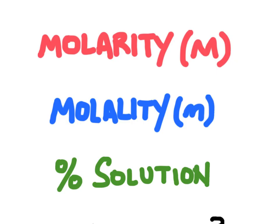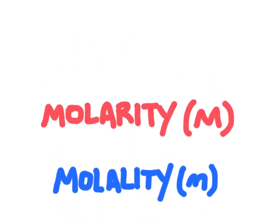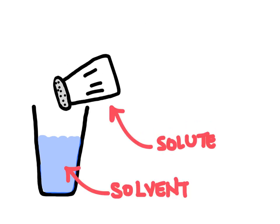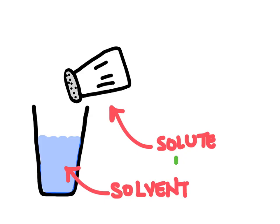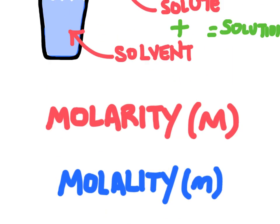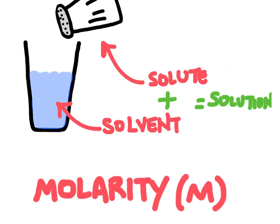When we're talking concentration we mean the amount of solute that's dissolved in a certain amount of solvent. For example, if you were to take a glass of water and make a solution by adding salt to it, the water would be the solvent and the salt would be the solute, and together they would make the solution. These different terms are all different ways of expressing how much solute we put in there.